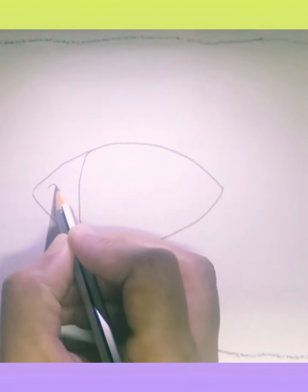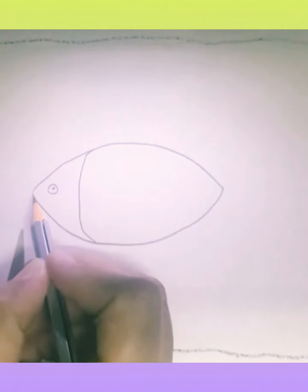Make a small circle for fish eye. For its mouth we will make a very tiny, very little curve.